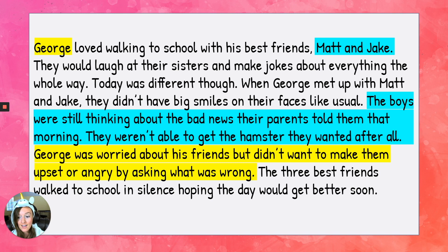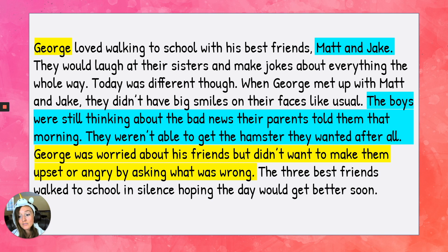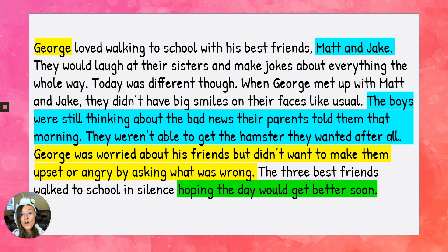They weren't able to get the hamster they wanted after all — we didn't know anything about a hamster in the last version, but now we do because this is third person omniscient. The narrator doesn't just know what George thinks and feels, but also what Matt and Jake think and feel. And then we also get 'the three best friends walked to school in silence, hoping the day would get better soon' — something all three of them were hoping. No one said it out loud, but because we're in third person omniscient we get to find out what's in their brains.